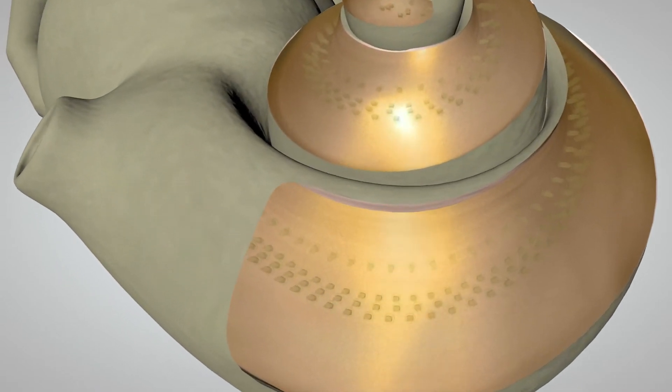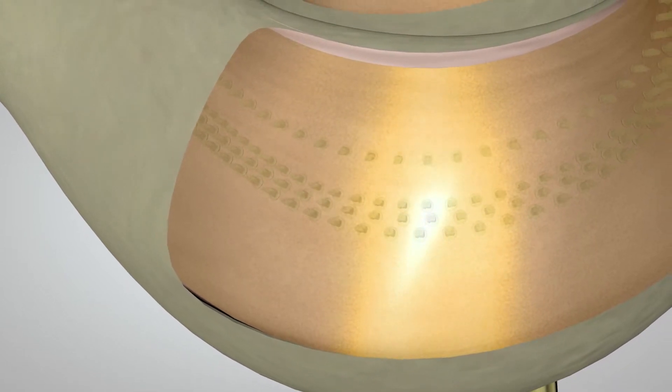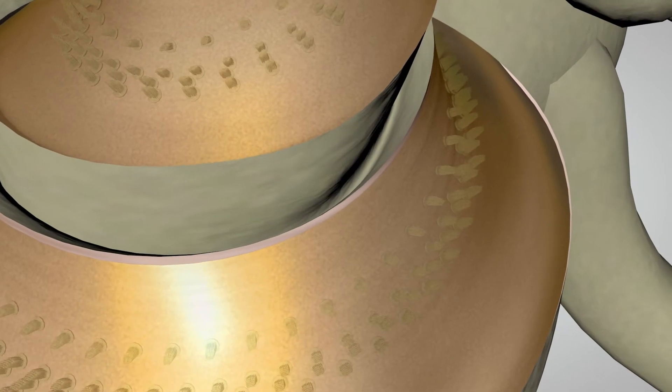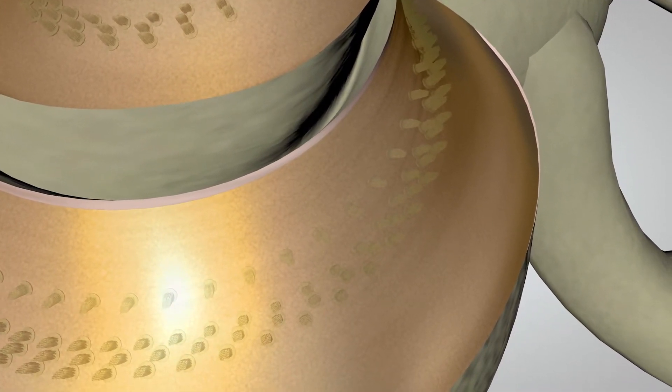The hair cells at the base of the cochlea detect higher-pitched sounds, such as a piccolo or flute. The hair cells toward the top of the spiral detect progressively lower-pitched sounds, such as a trumpet or trombone.